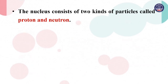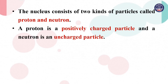The nucleus consists of two kinds of particles called protons and neutrons. A proton is a positively charged particle, and a neutron is a neutral particle.